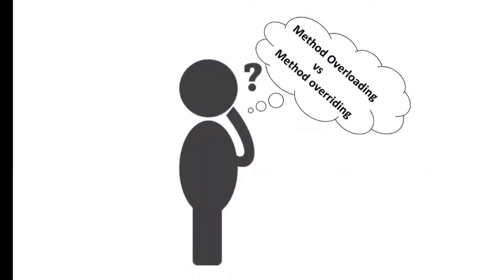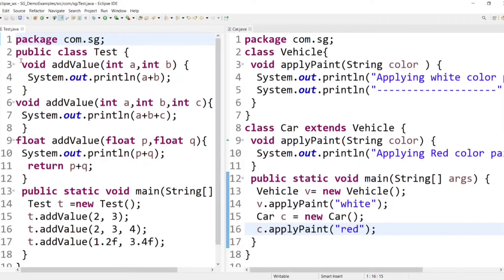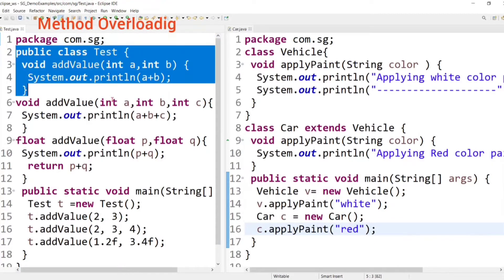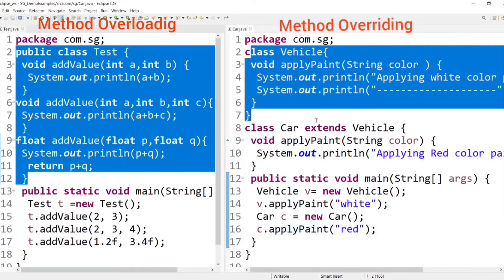So let's get started. We are going to discuss the difference between method overloading and method overriding — basically a comparison between the two concepts. To find similarities and differences, we need to put both concepts together. Here we have the concept of method overloading on one side and the concept of method overriding on the other.